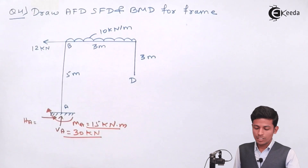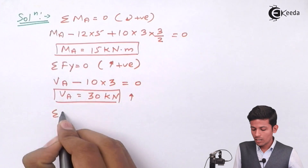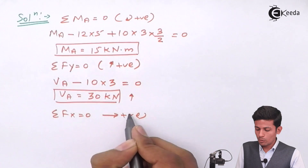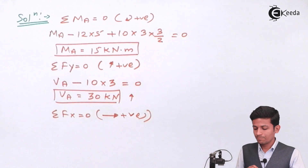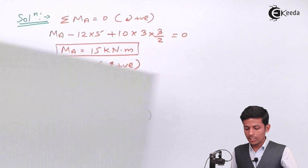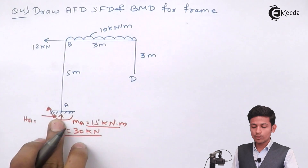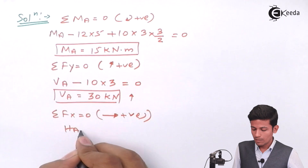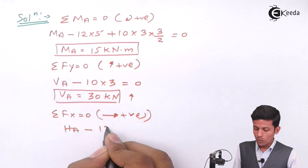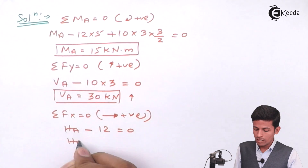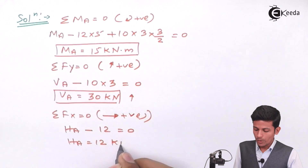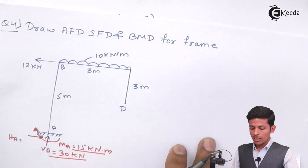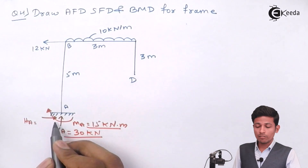Now applying ΣFx = 0, taking left-to-right as positive. HA minus 12 = 0, so HA = 12 kN. The positive value confirms our assumed direction (to the right) is correct.